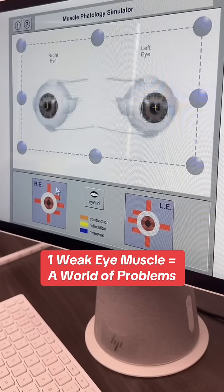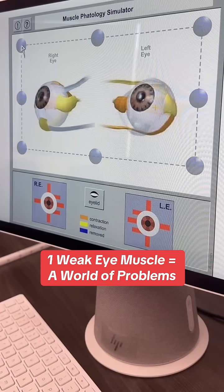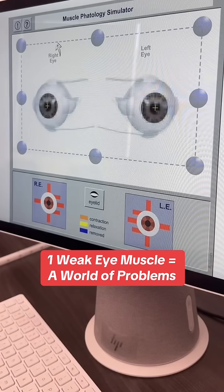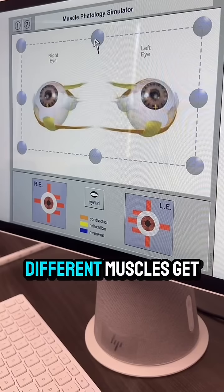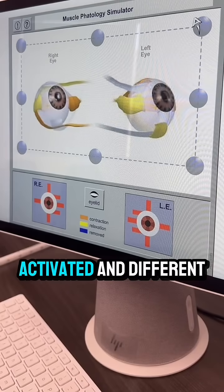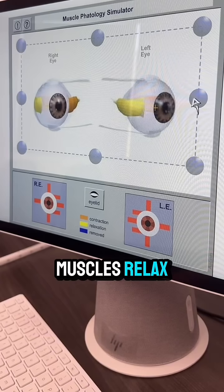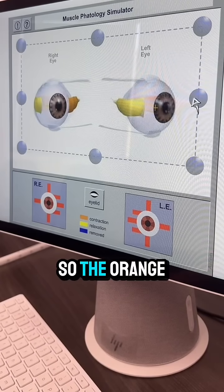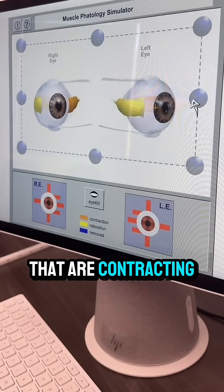So these are the right eye's muscles and then the left eye's muscles. Depending on what area you look into, different muscles get activated and different muscles relax. The orange shows the muscles that are contracting and the yellow are the muscles that are relaxing.